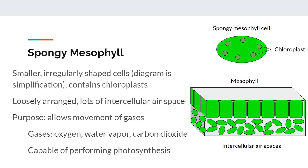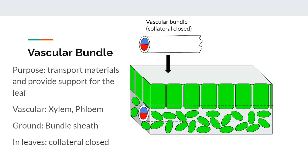Next, we can add a vascular bundle to our cross-section. Vascular bundles are also called the veins of the leaf and are sometimes visible to the naked eye. The veins have two purposes: transporting materials and acting as a rigid structural support for the leaf. There are two types of vascular tissue in vascular bundles: xylem and phloem. These two vascular tissues are surrounded by a particularly thick-walled parenchyma called the bundle sheath, which adds protection and rigidity. The type of vascular bundle in all leaves is called collateral closed.